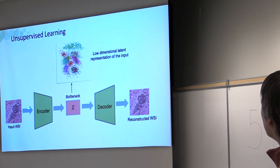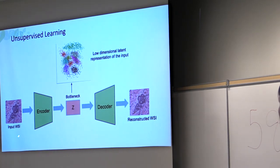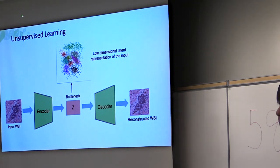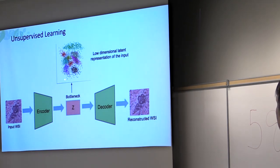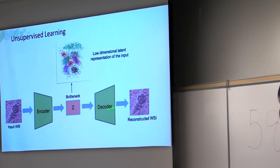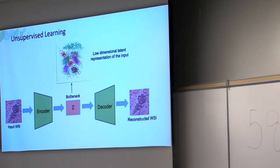Most unsupervised approaches have an encoder going down to a bottleneck. One approach is to cluster in the low-dimensional space, balancing clustering with a reconstructed whole slide image as the cost function to train a good encoder. We're also trying to find self-supervised tasks equivalent to inpainting for this kind of problem.